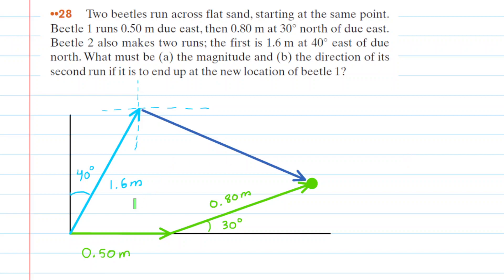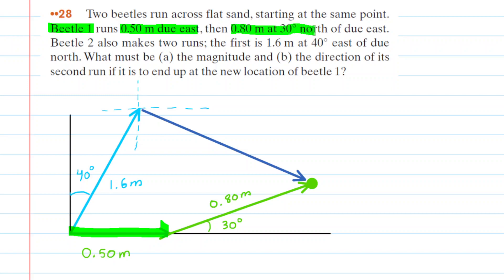We've drawn a picture to represent the motion of these two beetles, but let's pause and make sure this makes sense. We start with beetle number one, colored in green. That beetle runs 0.5 meters due east — we've started at an origin and drawn a vector going 0.5 meters due east. Then that beetle travels 0.8 meters at 30 degrees north of due east, represented by the second vector, and then that beetle stops.